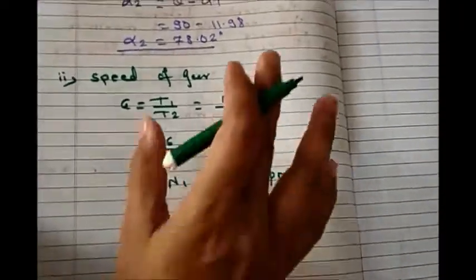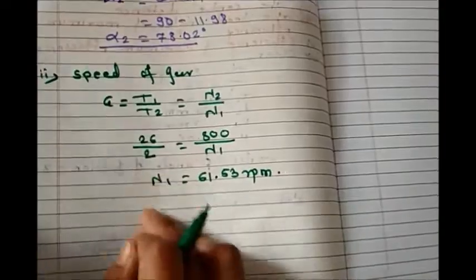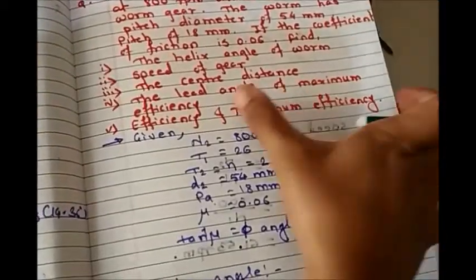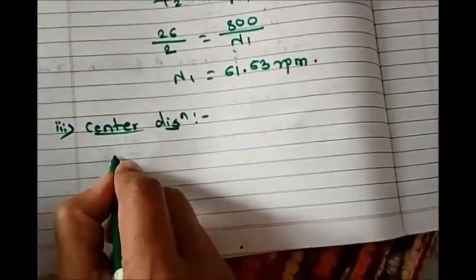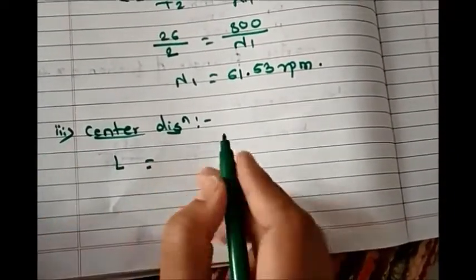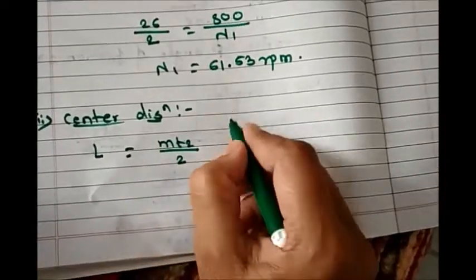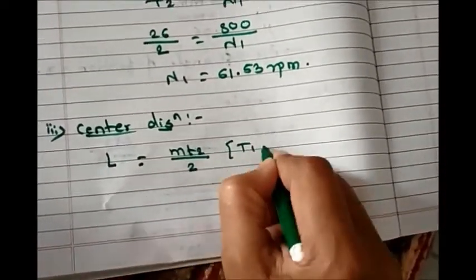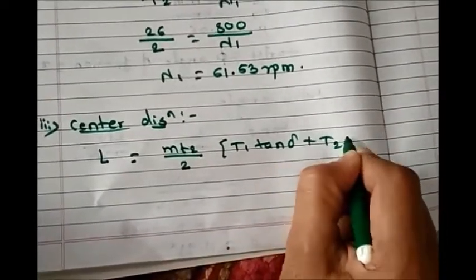It is as simple as that. By using gear ratio only, we can get speed of gear. Now third is center distance. To calculate center distance, let's write down the formula: center distance L equals mt2 by 2, inside the bracket t1 tan of delta plus t2.